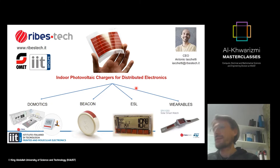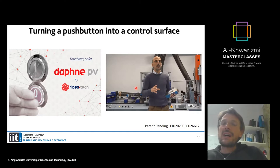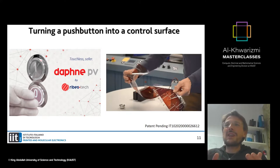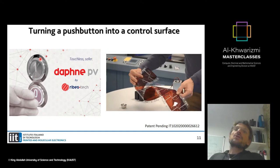A photovoltaic film is also a sensor, so you can use it to add simple functionalities to existing products. For example, Ribest Tech uses these films to convert a normal push button into a touchless one by placing the film behind it. This preserves braille labeling on existing buttons while adding new functionality — one example of how printed films can be integrated into existing products.